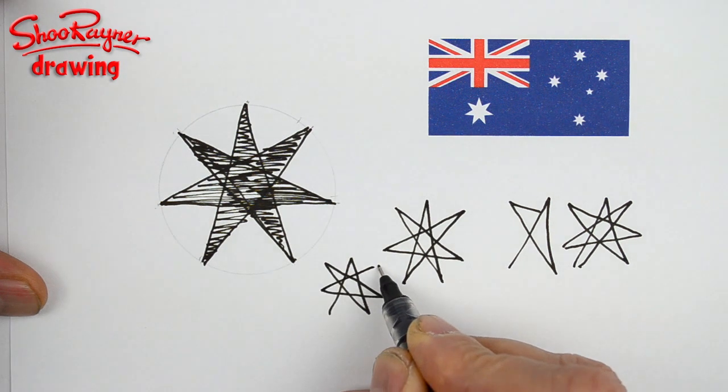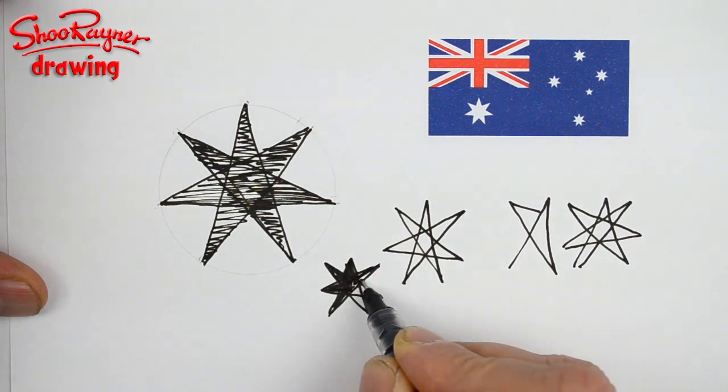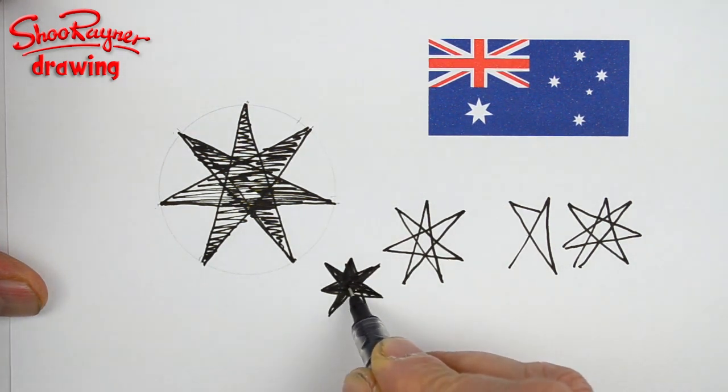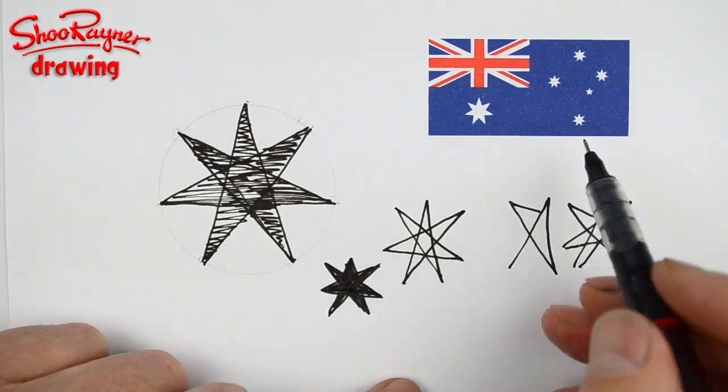Let me concentrate. Across there, and then to there, to there, and to there. If you just keep drawing and drawing and drawing, and practicing and practicing, you will get to draw quite good seven-sided stars.